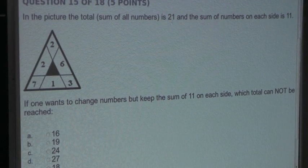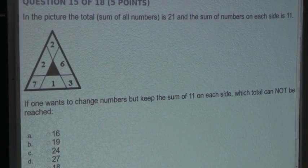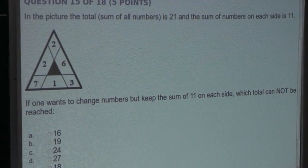So when you add up all three sides, you will get 3 times 11 equals 33. This product is larger than 21 because each corner value is added up twice when adding up all three sides.